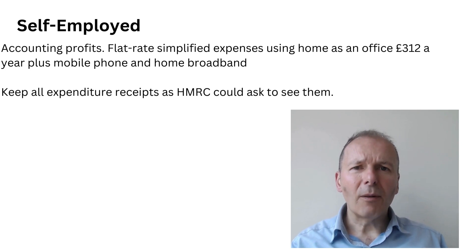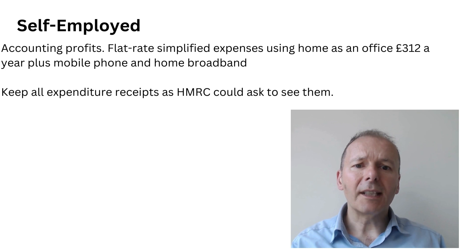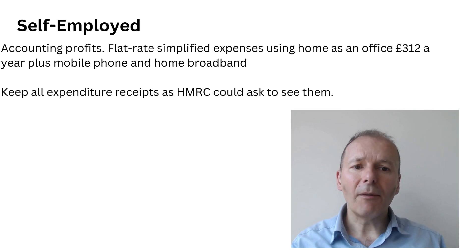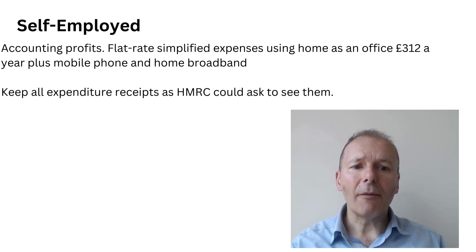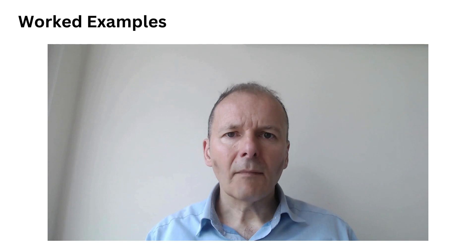If you're self-employed, your income tax will be based on your accounting profits, which accounts for all business costs. You're also allowed home office expenses — one approach is through flat rate simplified expenses, which are £312 a year plus the cost of your mobile phone and home broadband. If you are claiming expenses, you do need to keep receipts as HMRC could ask to see them.